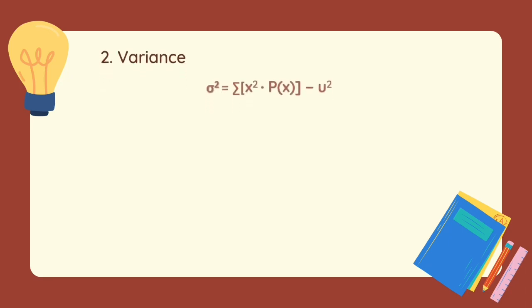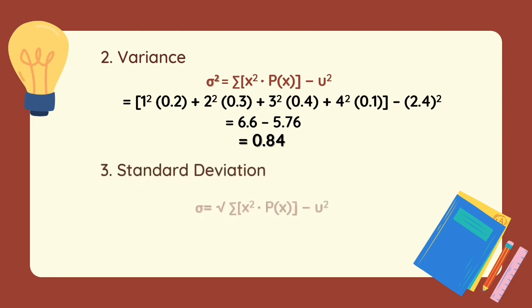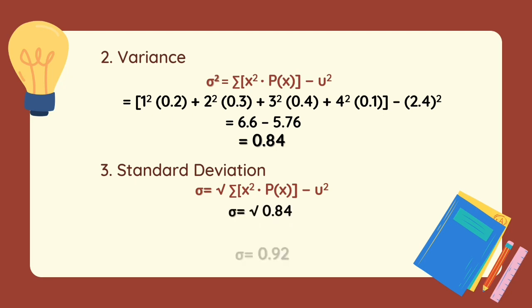Let's proceed on getting the variance and standard deviation. Applying the formula of the variance: 1²×0.2 + 2²×0.3 + 3²×0.4 + 4²×0.1, then subtract the square of the mean, which is 2.4. We have 6.6 minus 5.76, which equals 0.84. Therefore, our variance is equal to 0.84. The standard deviation is the square root of 0.84, which equals 0.92.